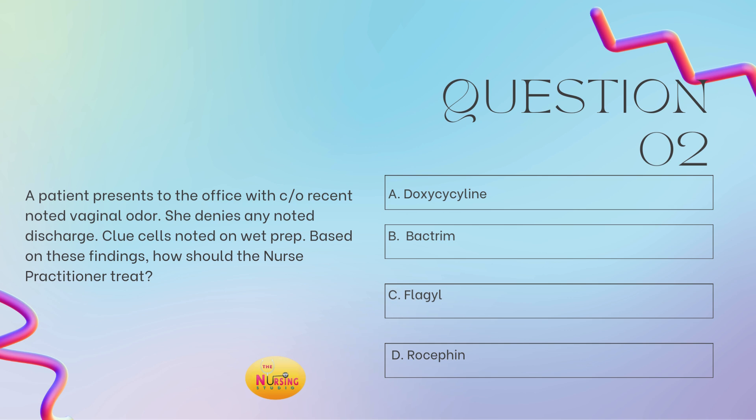Question number two. A patient presents to the office with complaints of recent noted vaginal odor. She denies any noted discharge. Clue cells are noted on wet prep. Based on these findings, how should the nurse practitioner treat? Is it A, doxycycline; B, Bactrim; C, Flagyl; or D, Rocephin? Take a moment and tell me what you got, you guys.